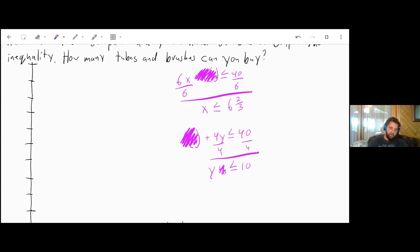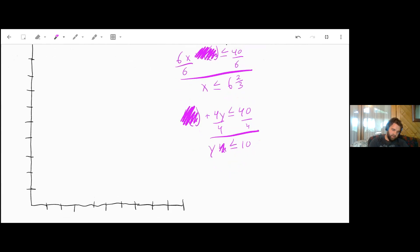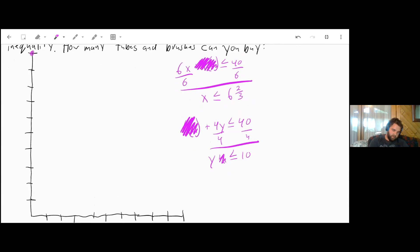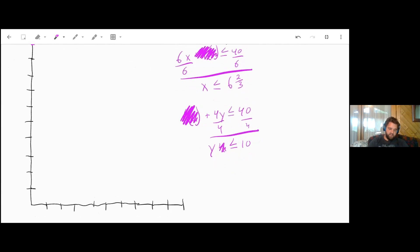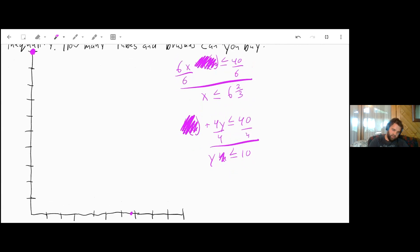Now we can plot a point at 10. So 1, 2, 3, 4, 5, 6, 7, 8, 9, 10. There we go. We have our y-intercept there. Our x-intercept will be at 6 and 2/3. So 1, 2, 3, 4, 5, 6, and 2/3. Then we just need a dashed line in between there.